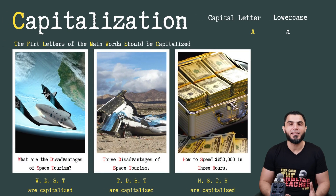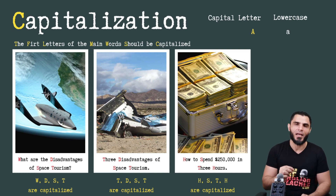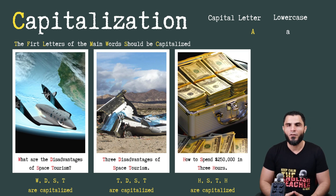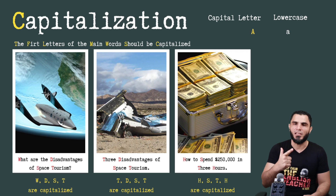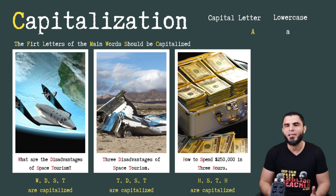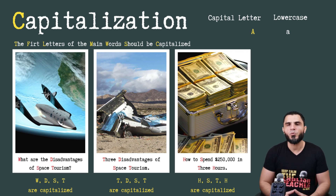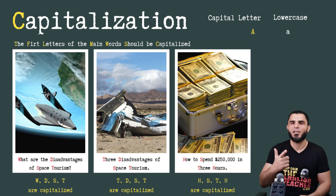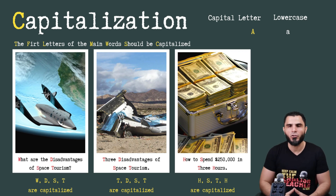The last thing you need to know is capitalization. As you can see, the first letters of the main words are capitalized. Only the main words should be capitalized. For example: What Are the Disadvantages of Space Tourism? — the letters W, D, S, and T are all capitalized. Three Disadvantages of Space Tourism — all the first letters of the main words are also capitalized. How to Spend $250,000 in Three Hours — the H, S, T, and H are also capitalized.